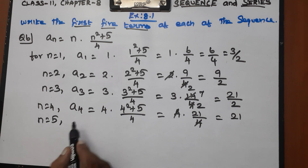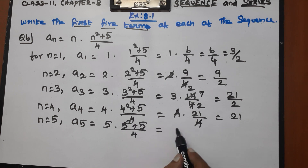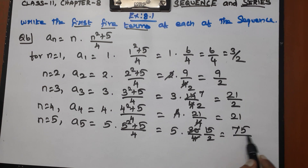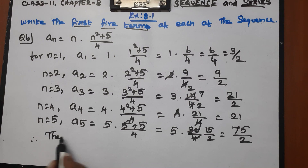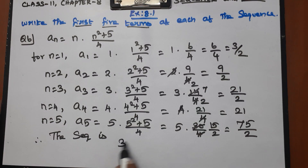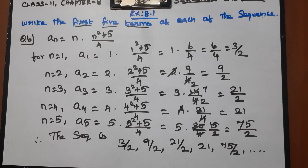For n equal to 5: a5 equals 5 into (25 plus 5) divided by 4 equals 5 into 30 by 4 equals 5 into 15 by 2 equals 75 by 2. Therefore the sequence of the given nth term is: 3/2, 9/2, 21/2, 21, 75/2. This is the first five terms of the given sequence. Please like and share the video for support. Thank you, students.